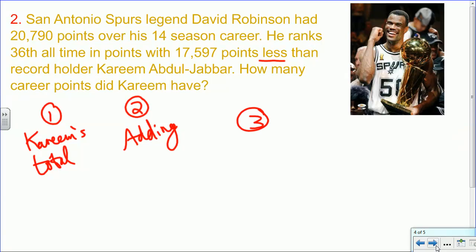So here we go. We need to carry out our plan. We said we're going to take however many David Robinson had, 20,790, and we're going to add 17,597. Once we add these, we have in the ones place, 7. In the tens place, we'll have 16, but 10 of those tens makes 100.